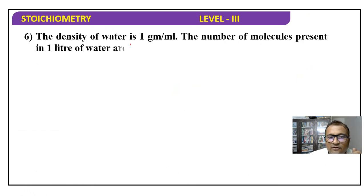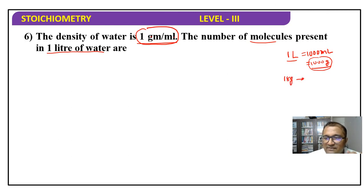Next, the density of water is 1 gram per ml. So it means the number of molecules present in 1 liter of water. First of all students, 1 liter means 1000 ml. Now the density is 1 gram per ml, so 1000 ml is 1000 grams. Now for 1000 grams, how will the number of molecules be calculated?